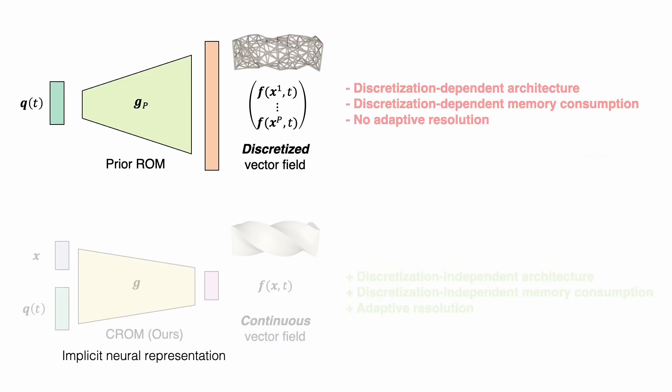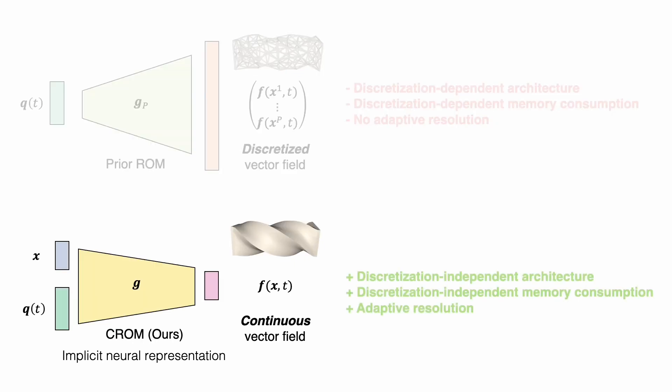To summarize, whereas prior reduced-order models build a low-dimensional representation for the already discretized vector field and thus suffer key limitations involving discretization-dependent architecture and memory consumption and no adaptive discretization, our continuous reduced-order model formulates the low-dimensional manifold for the continuous vector field itself using implicit neural representations. As such, we overcome the limitations of prior reduced-order models and now have discretization-independent architecture and memory consumption as well as adaptive resolution.